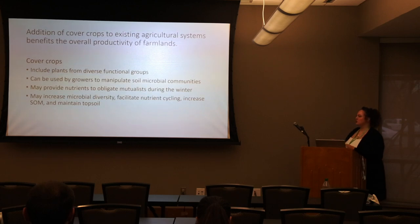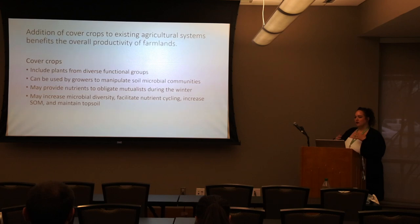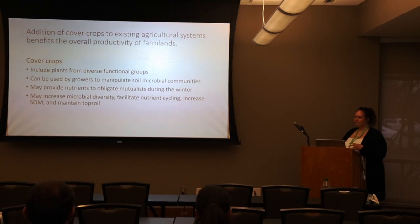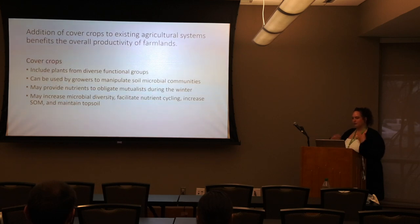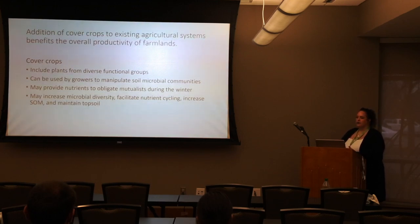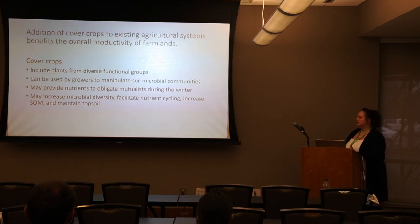Plants like cover crops can provide nutrients to microbes during the winter and early spring when we usually don't have anything on the field. When this land is fallow, there's no food there for the microbes, so adding a cover crop helps sustain them, which can result in increased productivity in the spring. Overall, with cover crops we can see an increase in microbial diversity, better nutrient cycling, and an increase in soil organic matter.